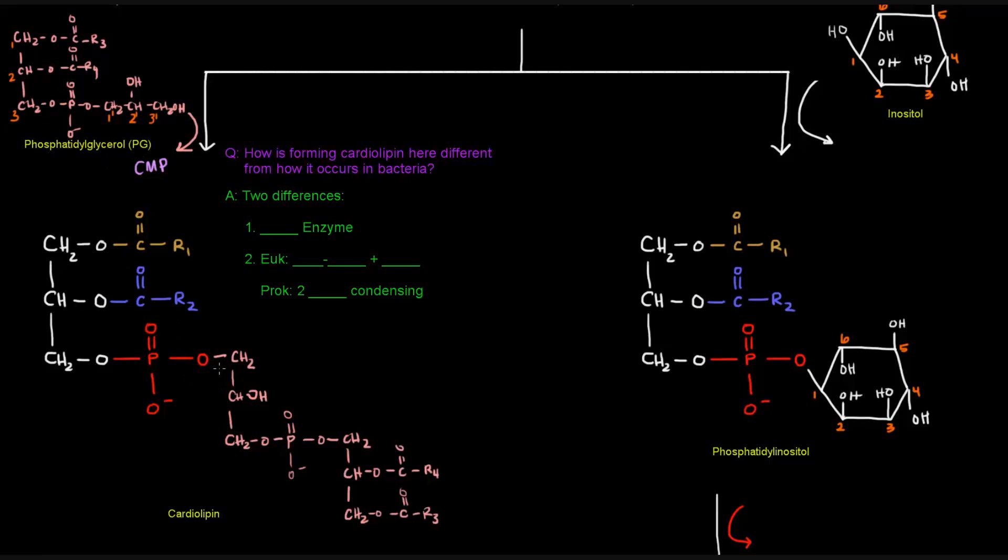So we've got, this is going to be 3 prime carbon here, 2 prime, 1 prime, then the phosphate group, and then this is going to be carbon number 3, 2, and 1.